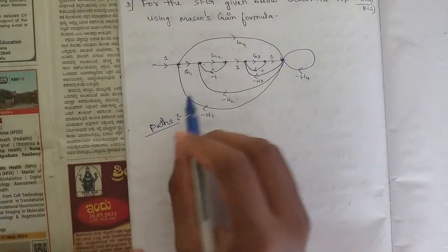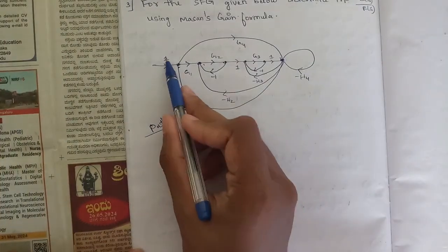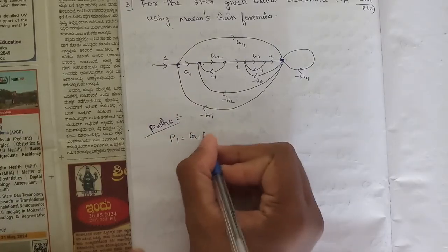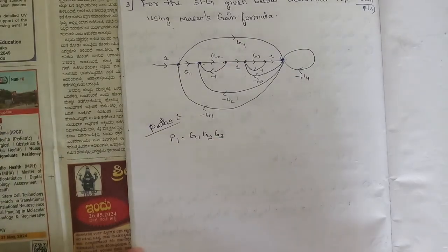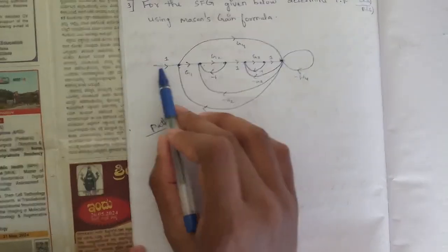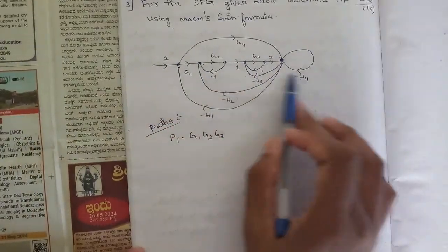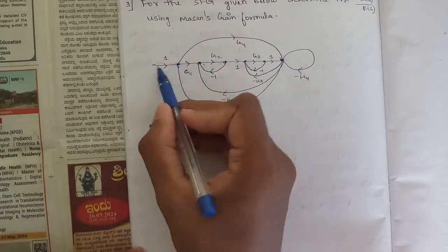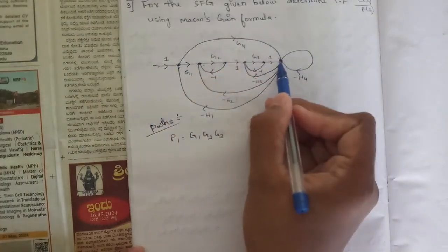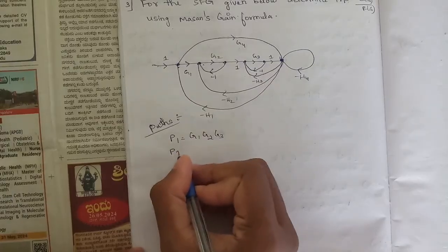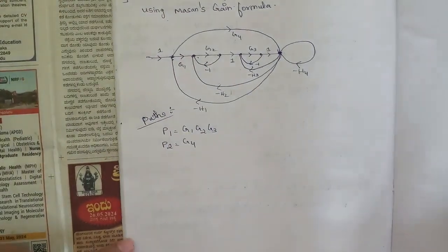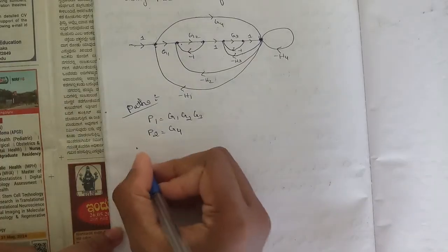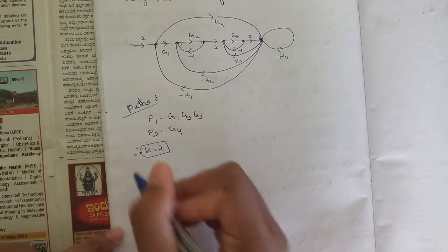Let's count how many paths there are. The first forward path p1 is equal to g1·g2·g3. Let's check for one more path - those are not forward paths as they don't terminate at the output. There is one more forward path upward: g4. So we have only two forward paths, which means k equals 2, and we have two values: delta1 and delta2.